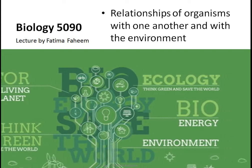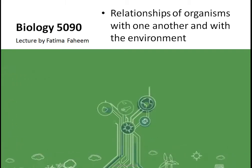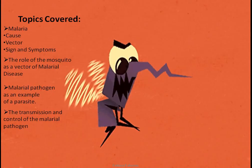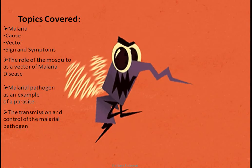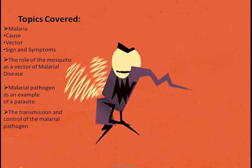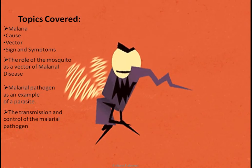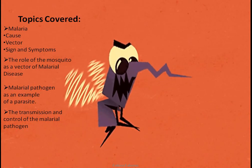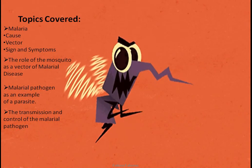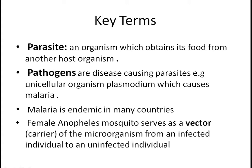Let's get on with our chapter on ecology — relationships of organisms with one another and with the environment. In today's lesson we will see what malaria is, what causes it, its vector, signs and symptoms, the role of the mosquito as a vector of malaria disease, transmission methods, the control of the malarial pathogen, and the malarial pathogen as an example of a parasite.